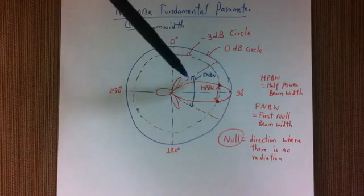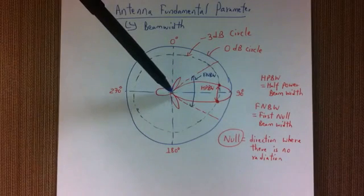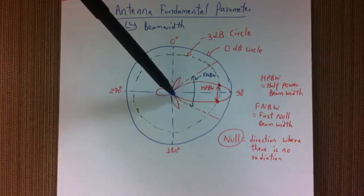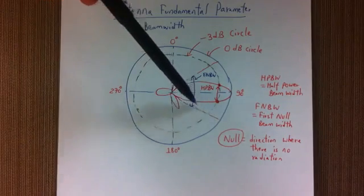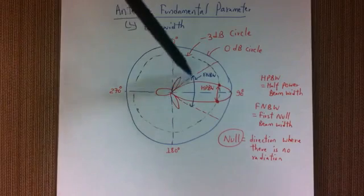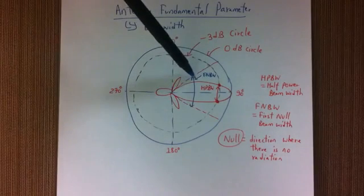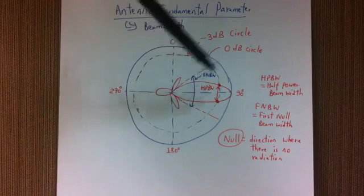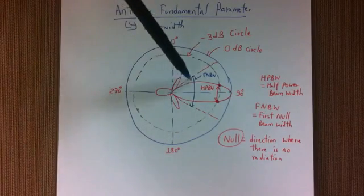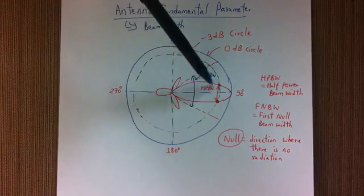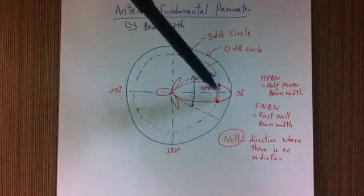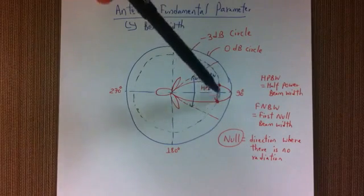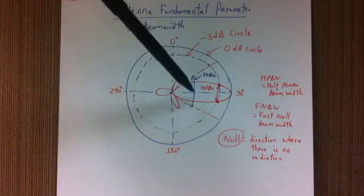Now for the first null beam width you basically have to find where there is no radiation points. So there is no radiation along this direction and there is no radiation along this, so from this distance to that distance is your first null beam width. And this is usually bigger than your half power beam width and these are measured in degrees. So suppose this is 30 degrees then this could be 50 degrees.